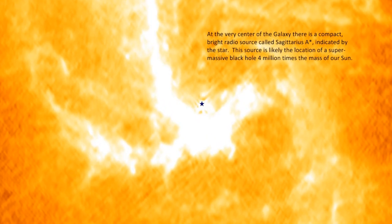At the very center of the galaxy, there is a compact, bright radio source called Sagittarius A star, indicated by the star. This source is likely the location of a supermassive black hole 4 million times the mass of our own sun.